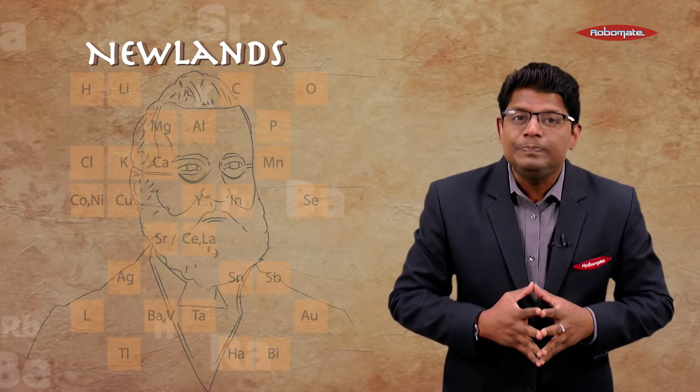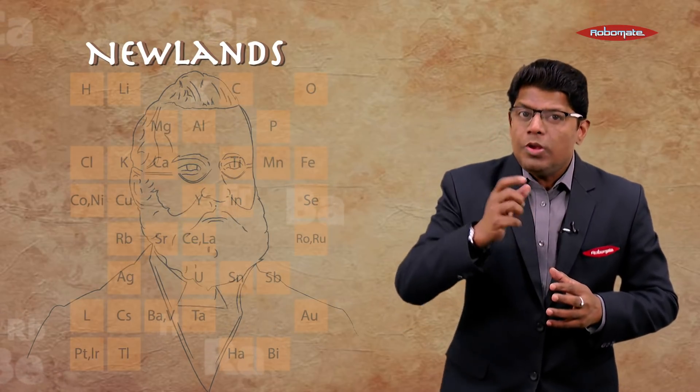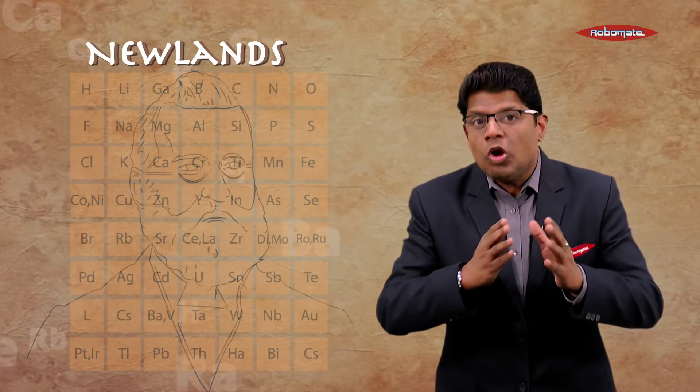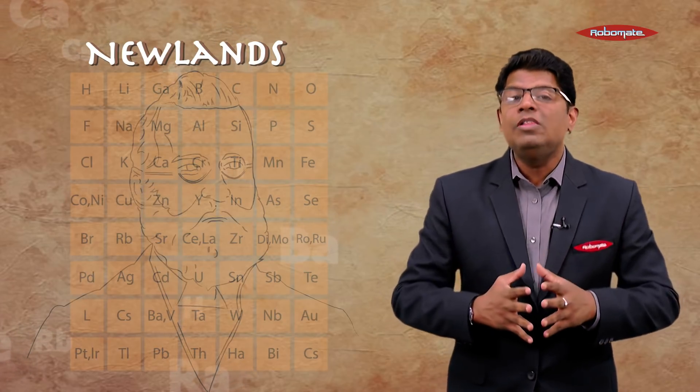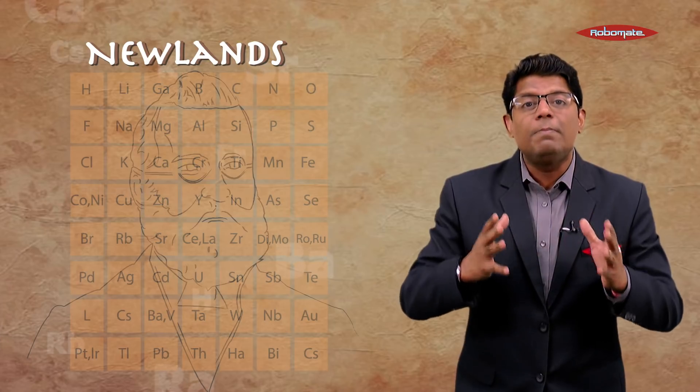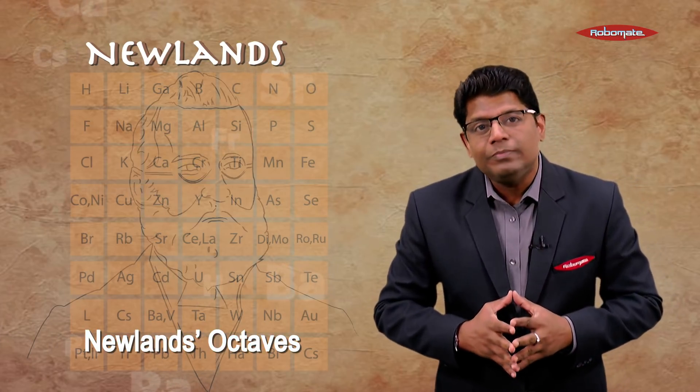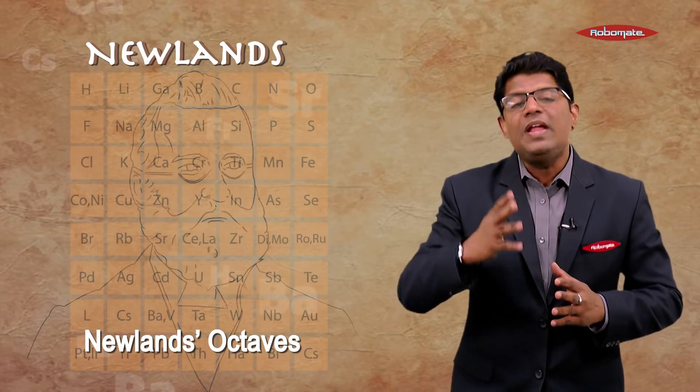Then came the next scientist, Newlands. He also thought that atomic mass is the fundamental property of an element, and he classified the elements on the basis of atomic mass. During his time, there were 56 elements. But once again, he could not classify all the elements on the basis of atomic mass in a table called Newlands' Law of Octaves, and that also failed.